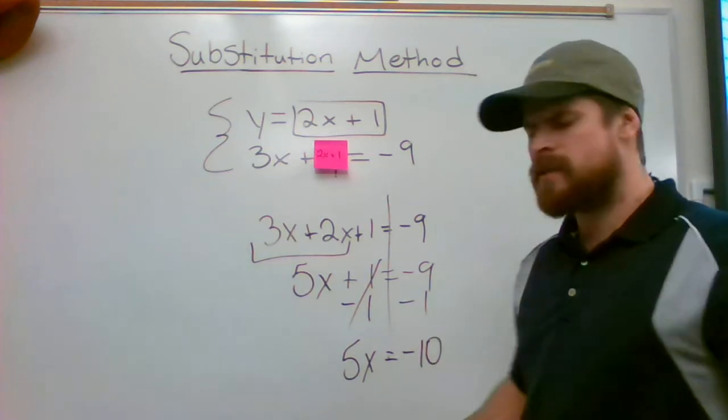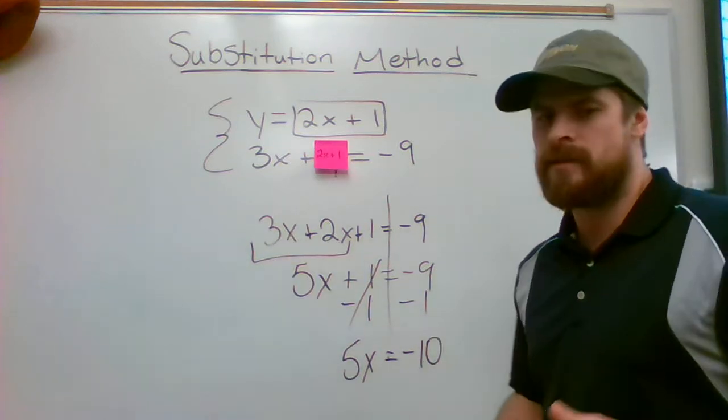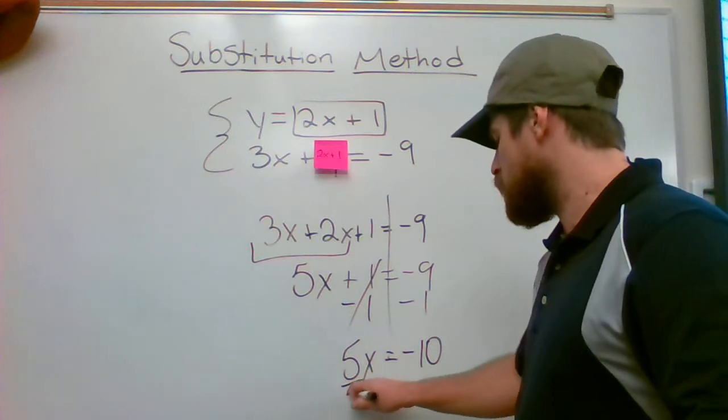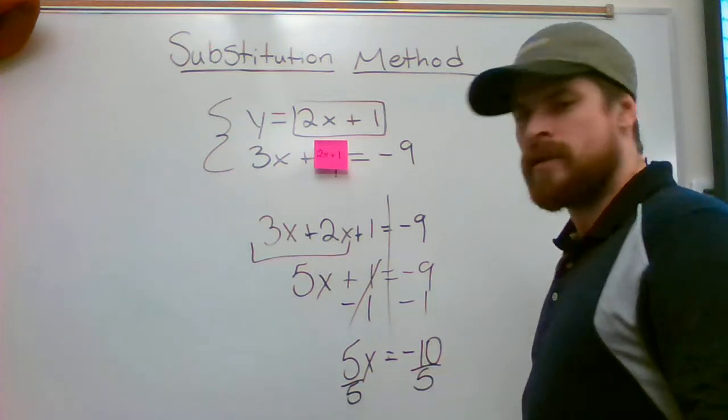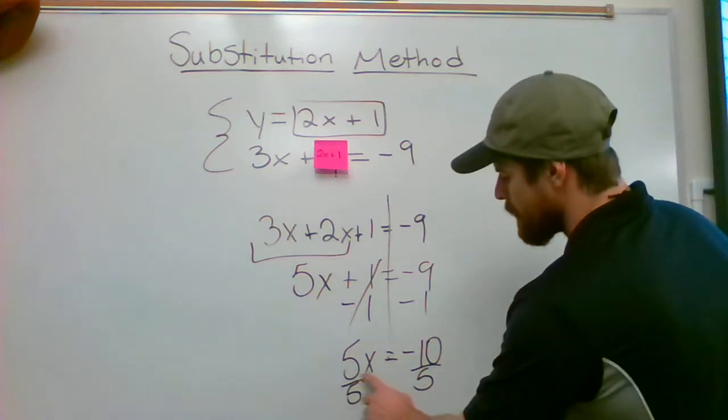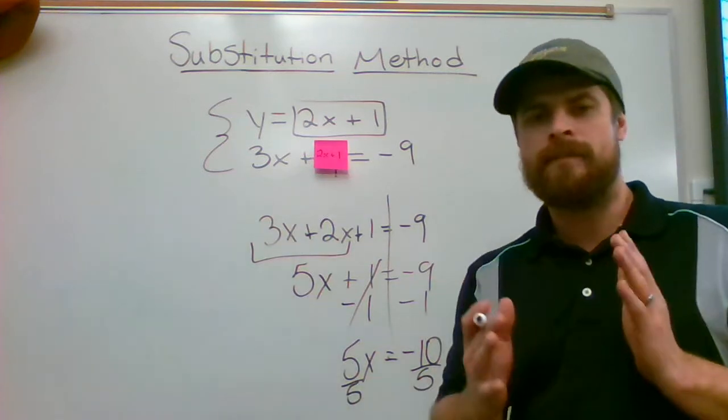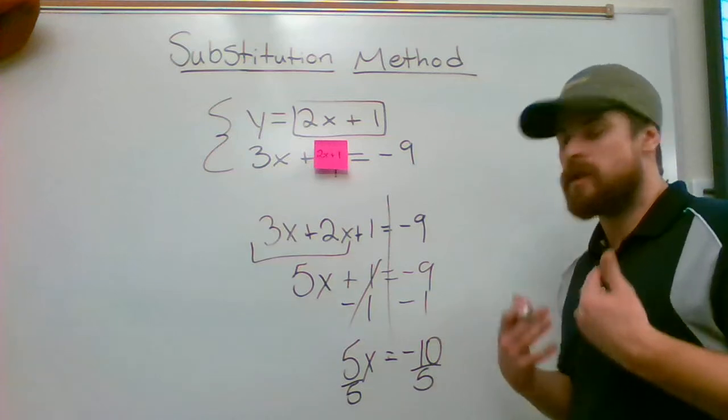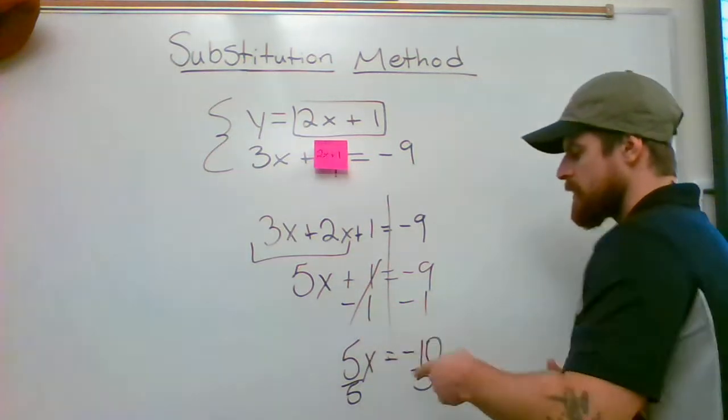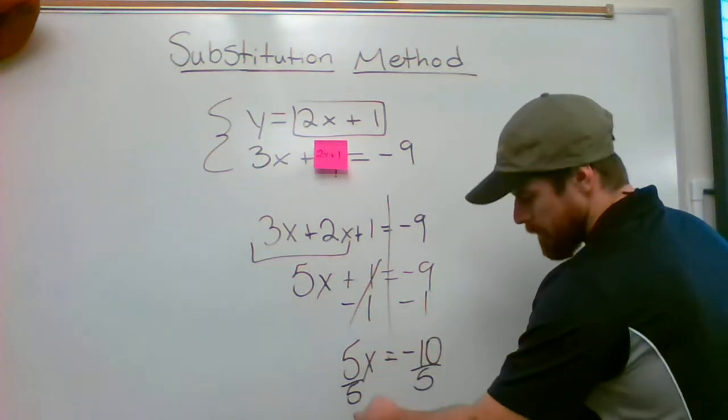I now have 5x equals negative 10. Some of you at this point can solve it mentally, but I always like my students to show the last and final step just to make sure they're getting the right result. Divide by 5. Now you're wondering why did I divide? 5 and x side by side means multiplication. We're using inverse operations just like I used up here. Opposite of adding is subtracting. Opposite of multiplying is dividing.